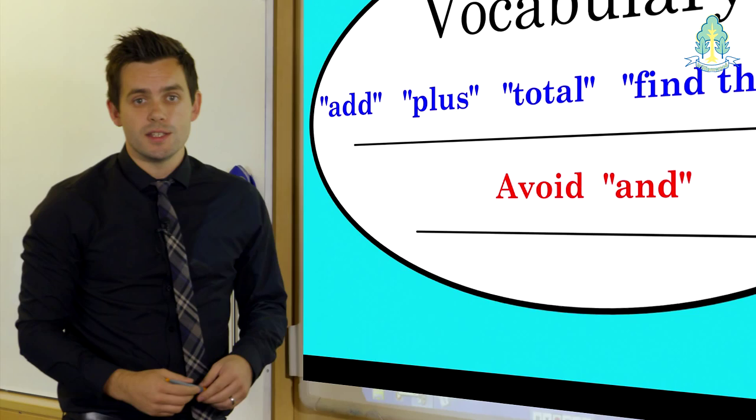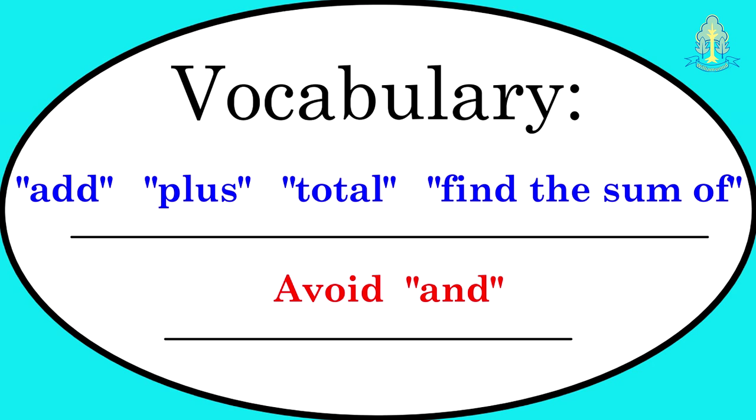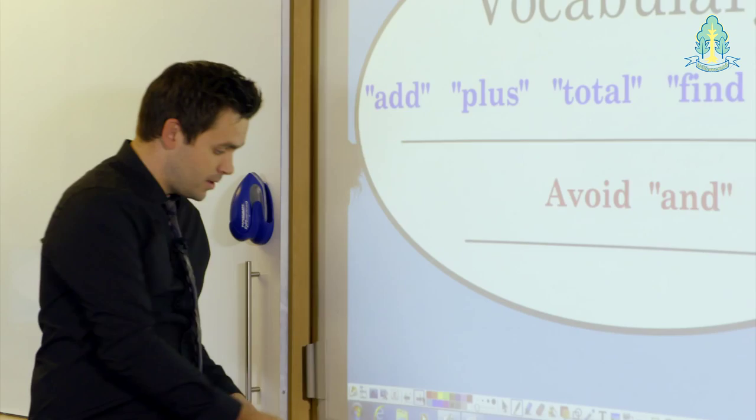In terms of vocabulary, we use words and phrases such as add, plus, total, find the sum of, and we try and avoid the use of the word and. For example, five and four is nine, something that's very commonly said but we should try and avoid it.